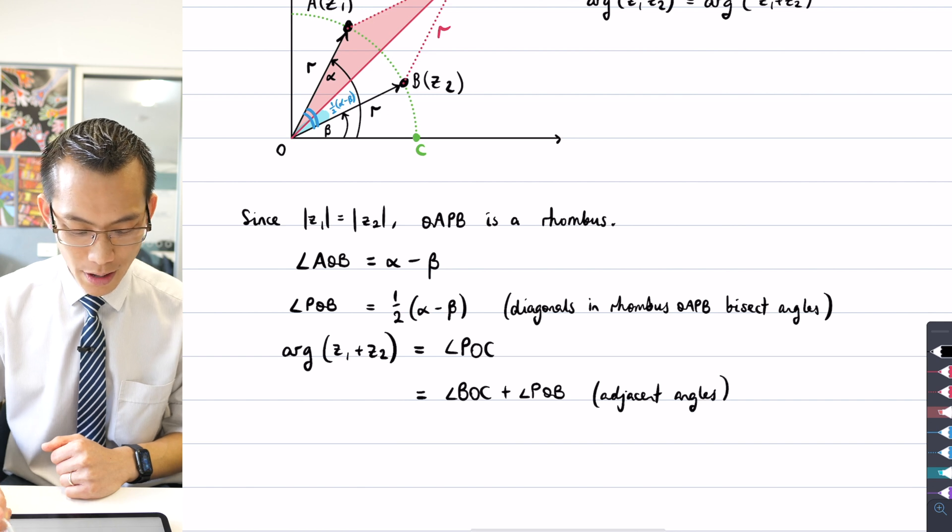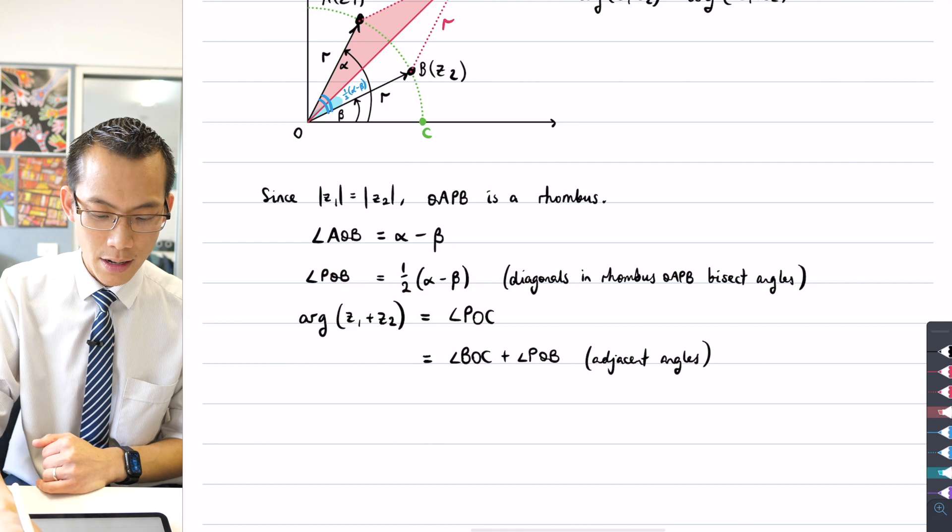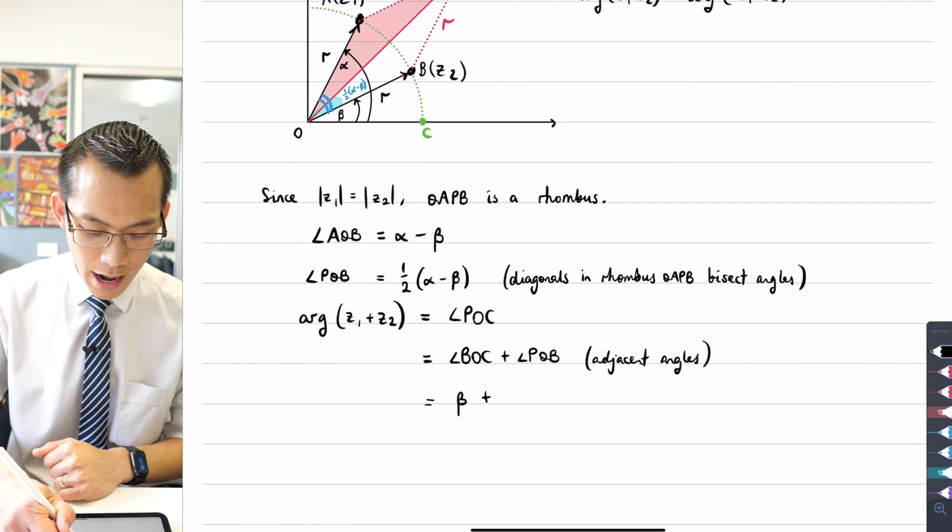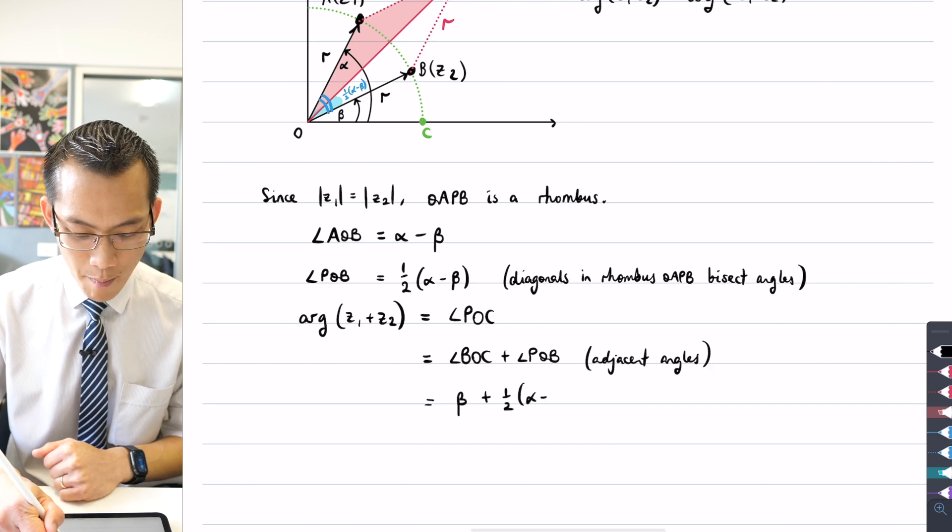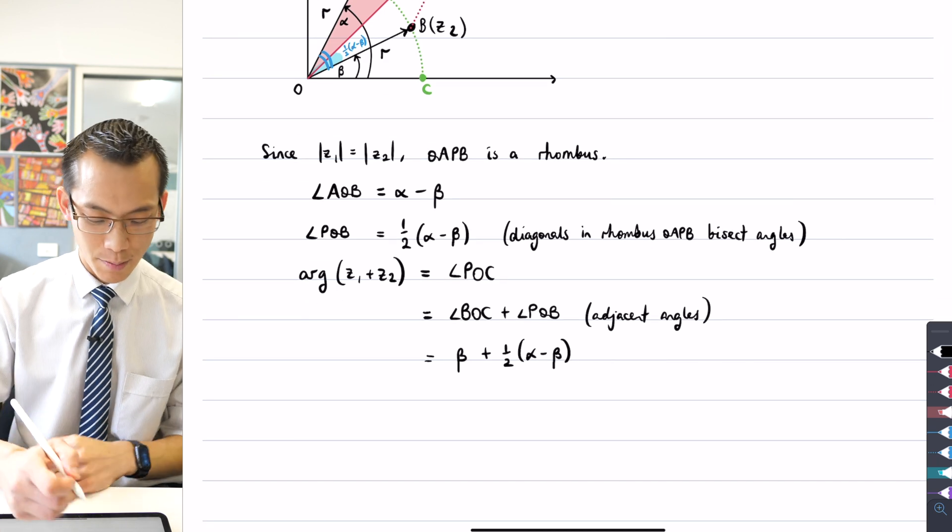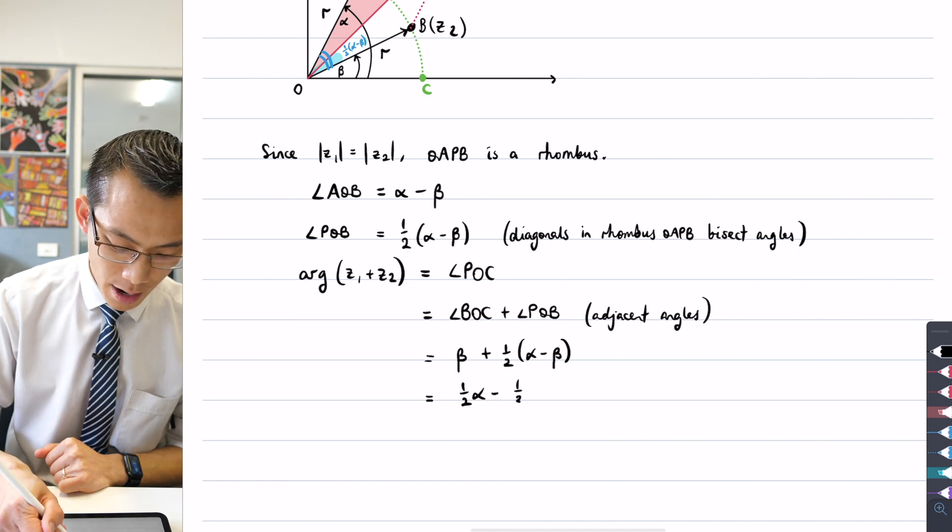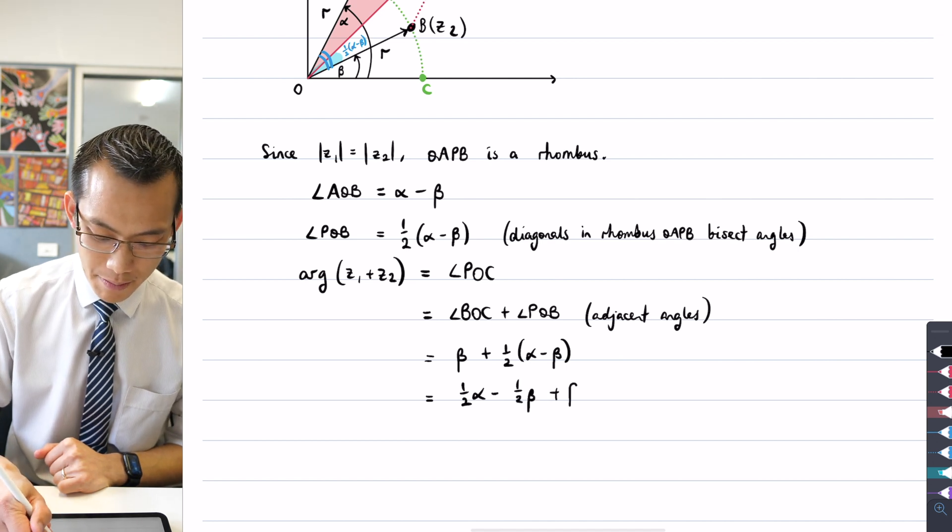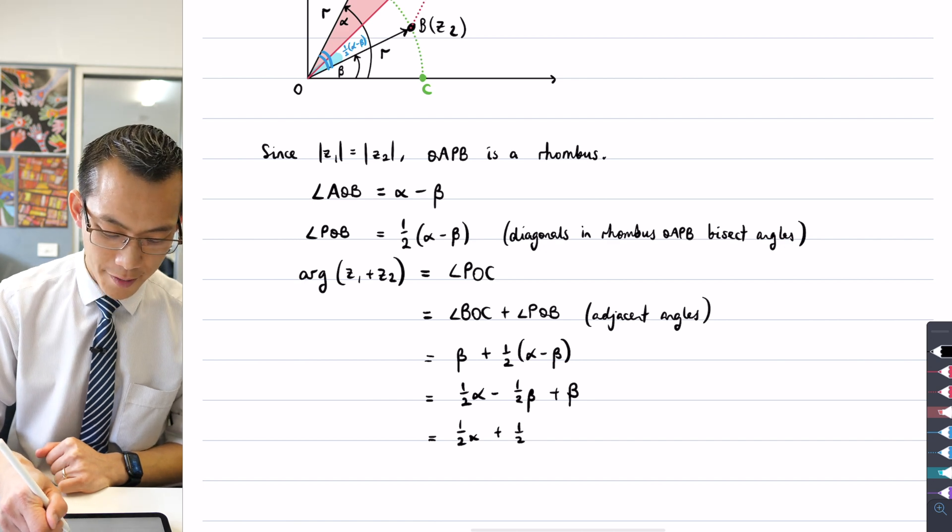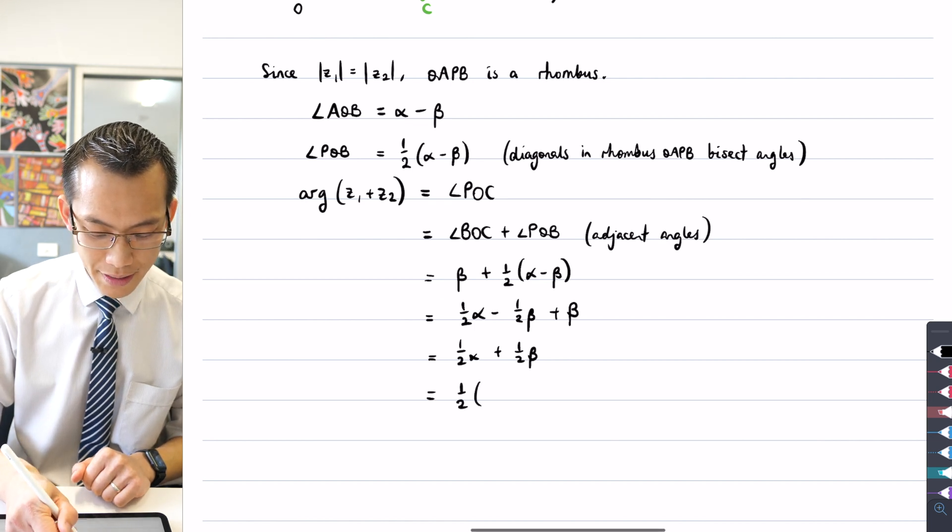Now, I worked out what each of these were, one by definition and one by this construction. So I can say, what's BOC? That's beta. And then I've got a half alpha minus beta. So this is promising. I can actually collect some like terms here. Half alpha minus half beta plus beta. That's going to be half alpha plus half beta, just collecting my beta terms together. And I'm going to factorize out that half.